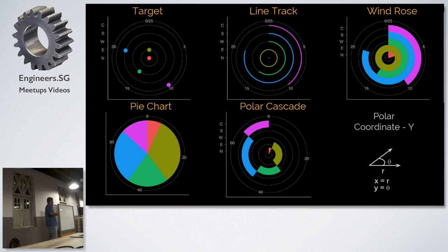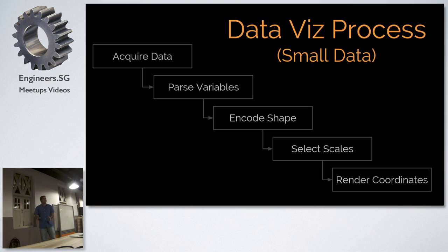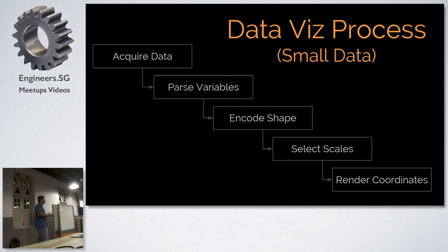This is just 20 visualizations with the simplest possible dataset. Obviously, if you increase the number of columns or rows, this will completely explode. The database process for a very small dataset is: acquire the data, parse the variables, encode into a shape, select scales, and render coordinates. Once you do this, you can do any kind of visualization — you can write your own visualization systems.